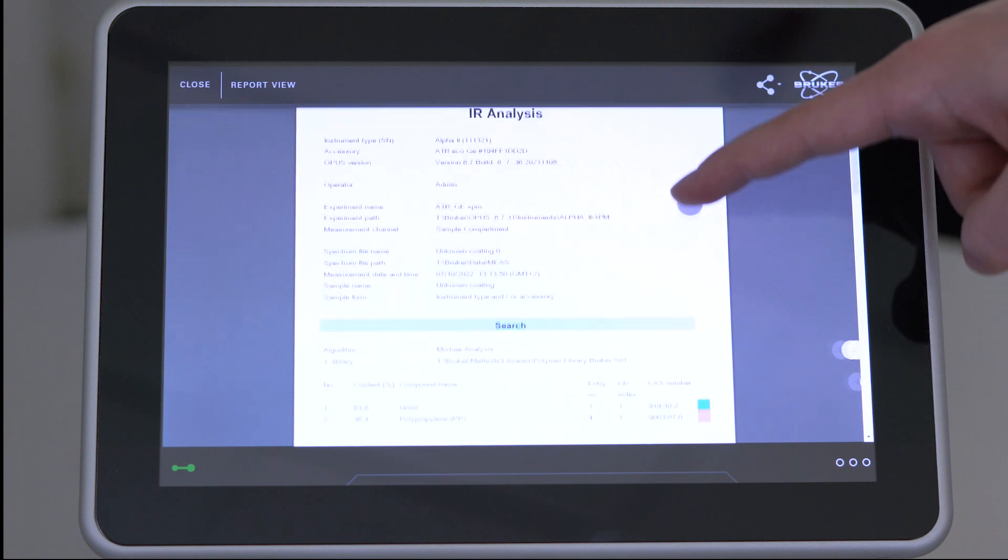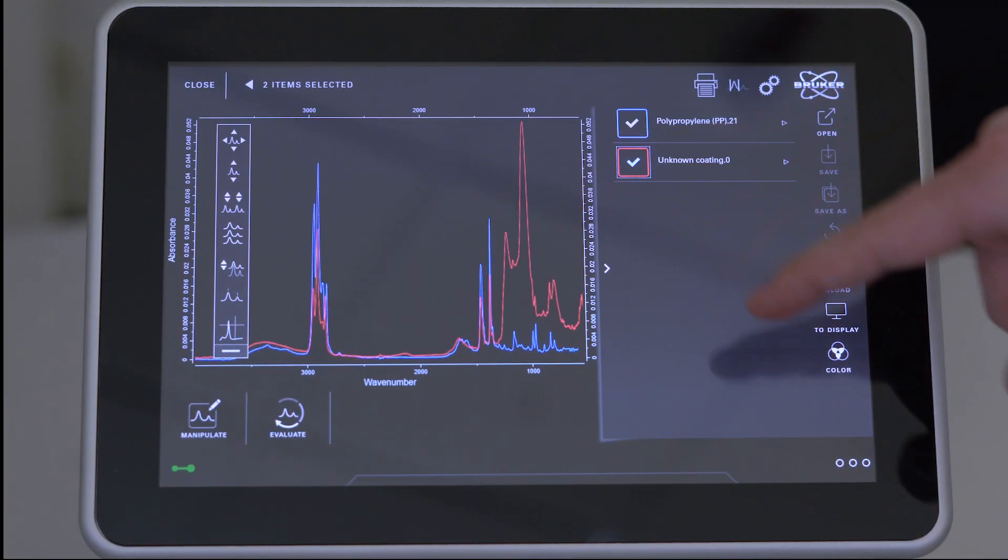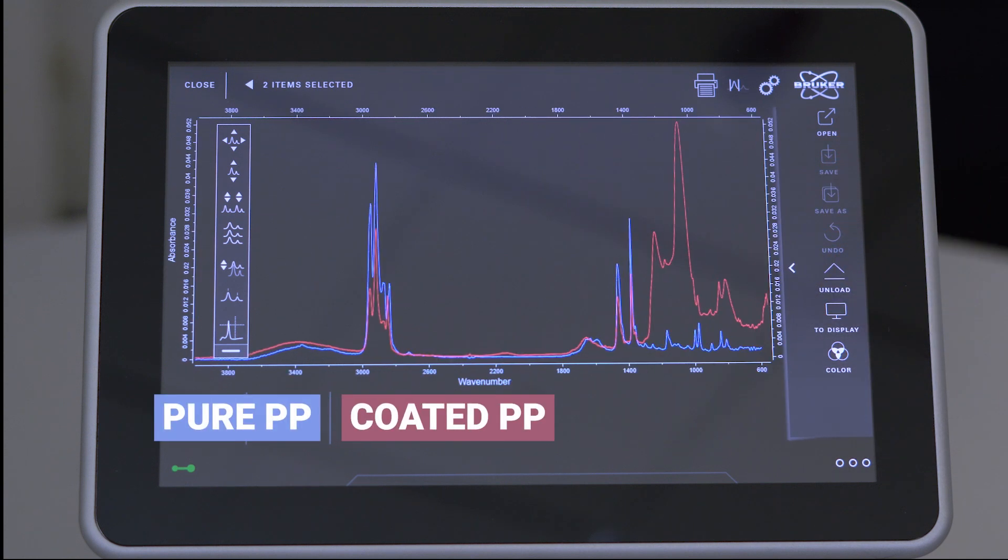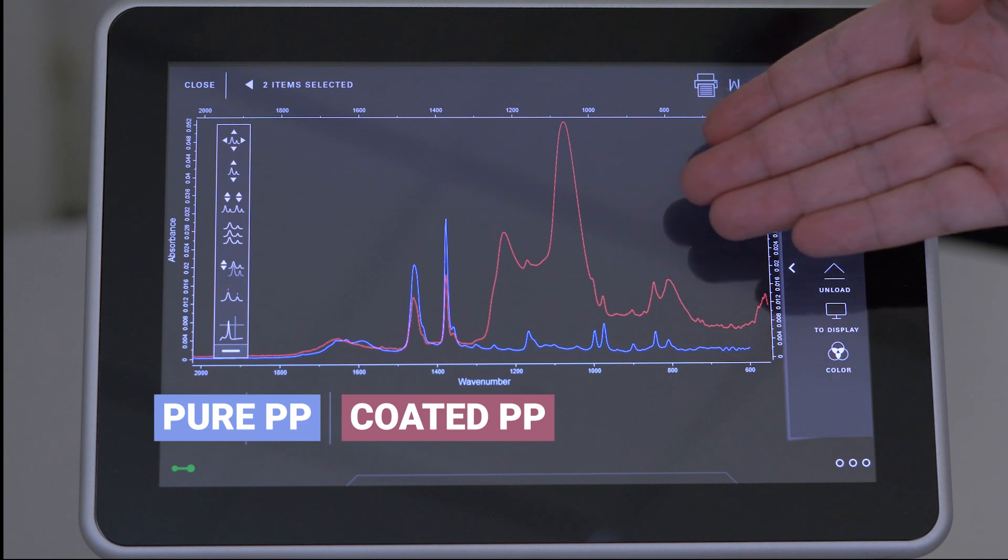Finally, as a simple verification, we can compare the IR spectrum of the coated surface with the spectrum of the uncoated backside. Now, we can conclusively tell that the coating is present and intact.